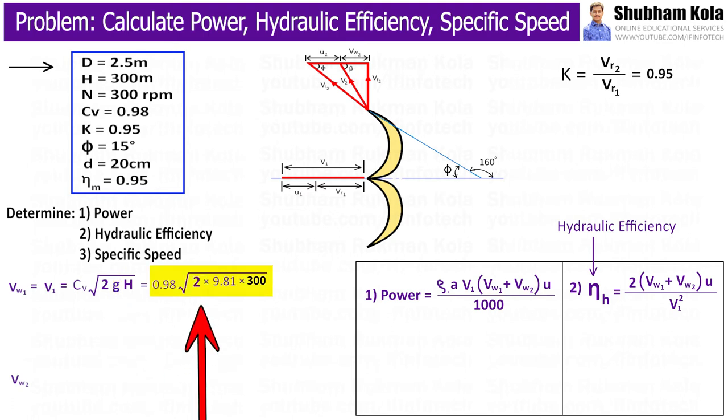So, here, I will put all the values, and by calculating this, we will get velocity of jet at inlet, i.e. V1 equal to 75.19 m per second, which is also equal to Vw1.